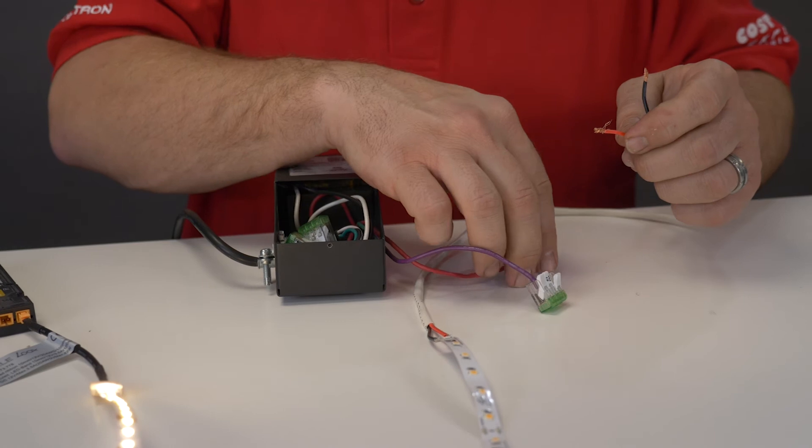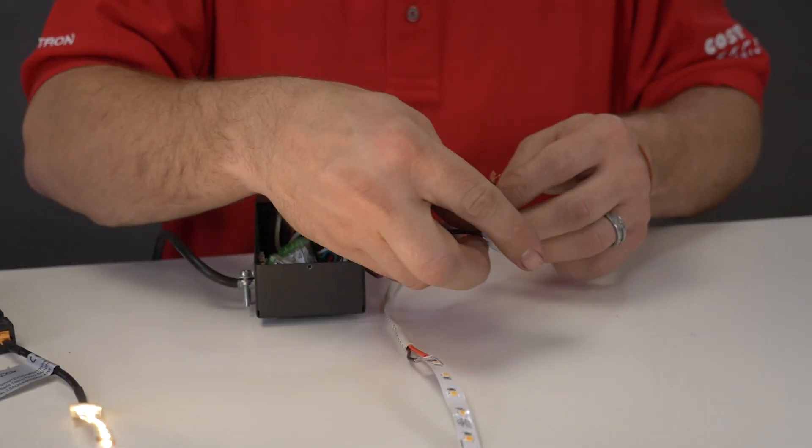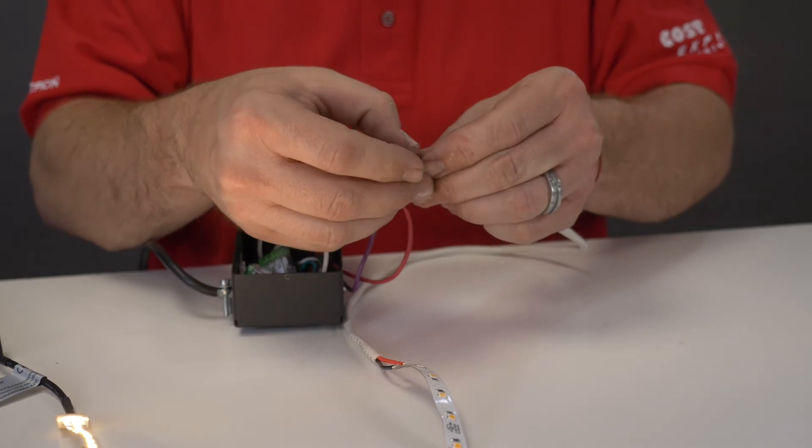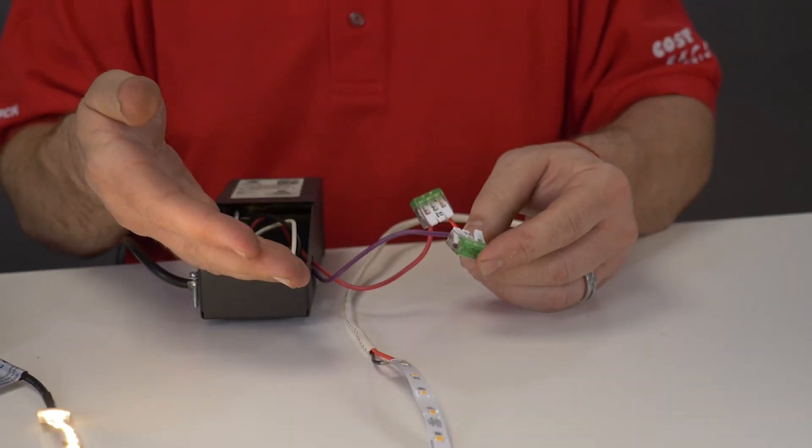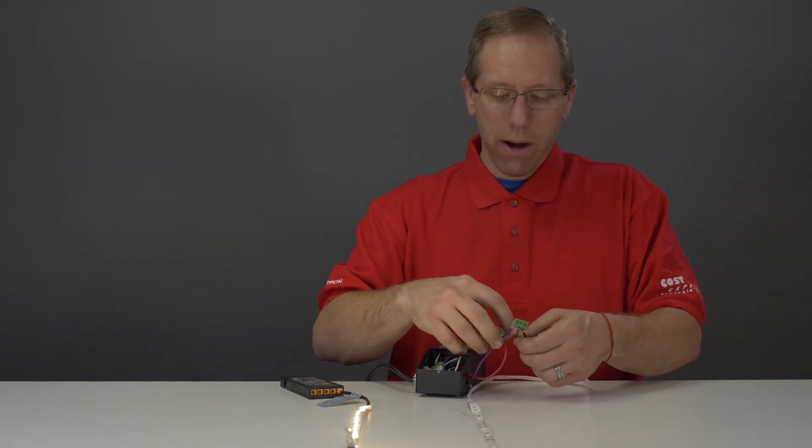Traditionally, you would have your red as your positive and your black as your negative. So when you do that and you match your red to your positive and your black to your negative, sometimes it doesn't work. Before you change any of your connections, change your wiring at the power source.